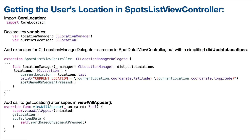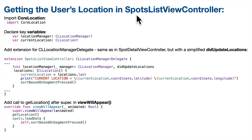Before we can figure out the distance from the user's location to a spot, we have to first get the user's location. And since this is to show the distance between the user's location and each of the cells in our table view, we need to do this in SpotListViewController — that's the view controller that has the table view in it.